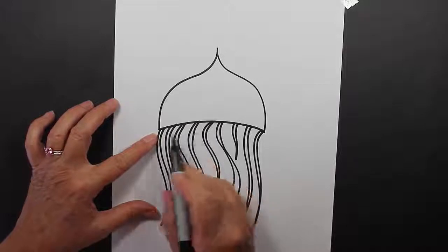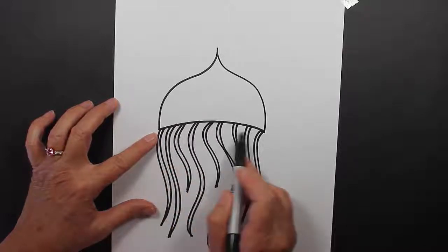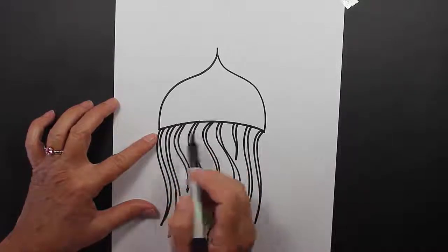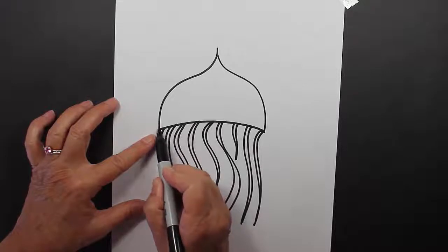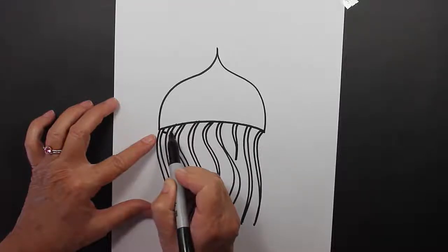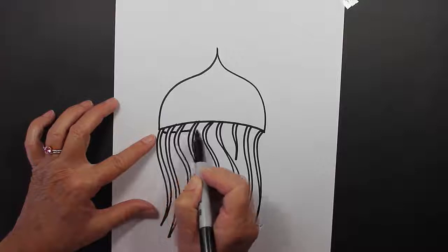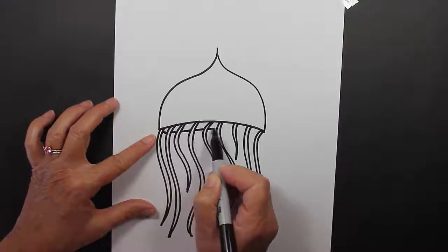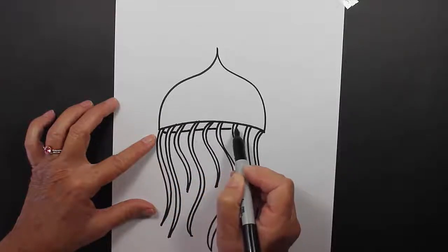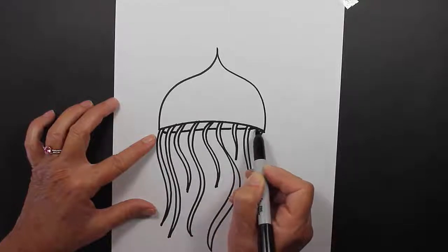Now this is the tricky part. We're going to make the back part of our jellyfish with a line that jumps over tentacles, so it looks like it's behind the tentacles. Not an easy thing to do. You might need a little bit of practice with this.